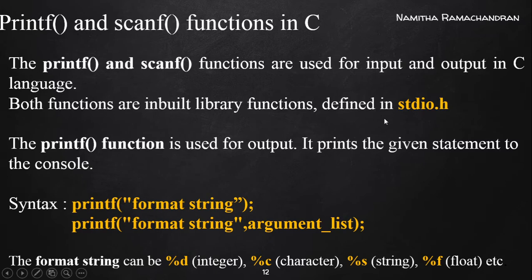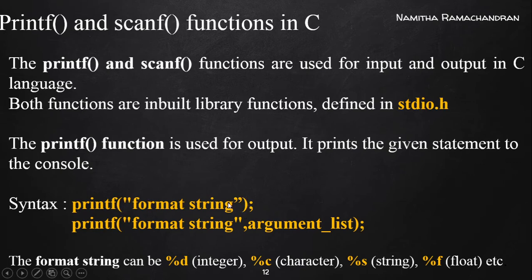The printf function is used for outputting — it prints a given statement to the output console. The general syntax for printf is: the keyword printf, inside parentheses, and inside double quotes we specify the string or statement to display directly. The printf statement must end with a semicolon. In another form of printf, inside the quotes we specify a format string, followed by a comma and then the argument list, ending with a semicolon.